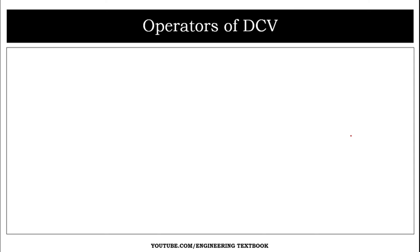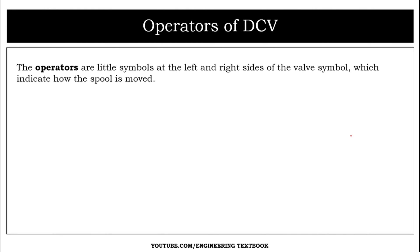Now let's see the operators of direction control valves — how we can operate the DCV. The operators are the small symbols at the left and right side of the valve which indicate how the spool is moving. The operator symbol appears on both the left and right side of the direction control valve.